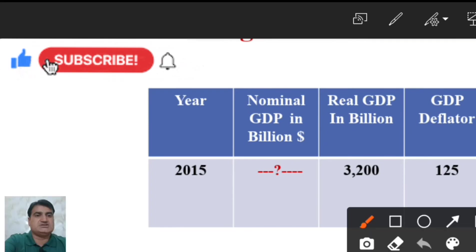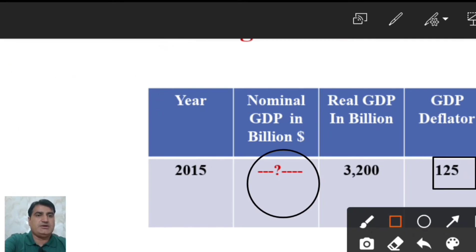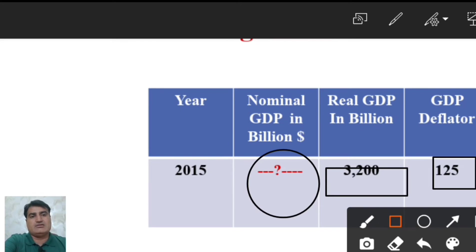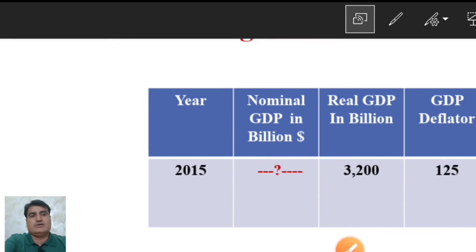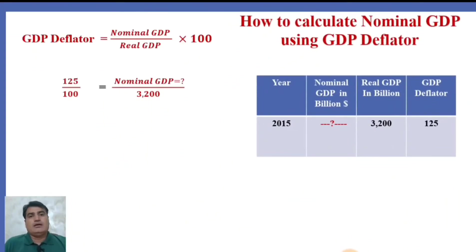Now the given data includes the GDP Deflator of $125 and the real GDP of $3200 billion, which we already calculated. We are going to calculate the nominal GDP by plugging the given figures into the GDP Deflator equation.